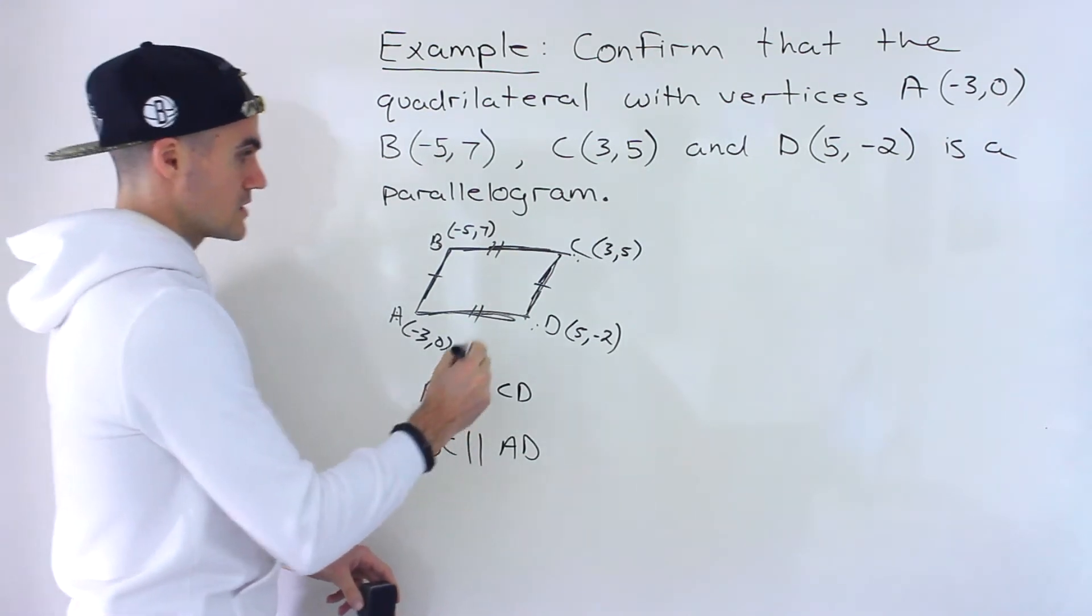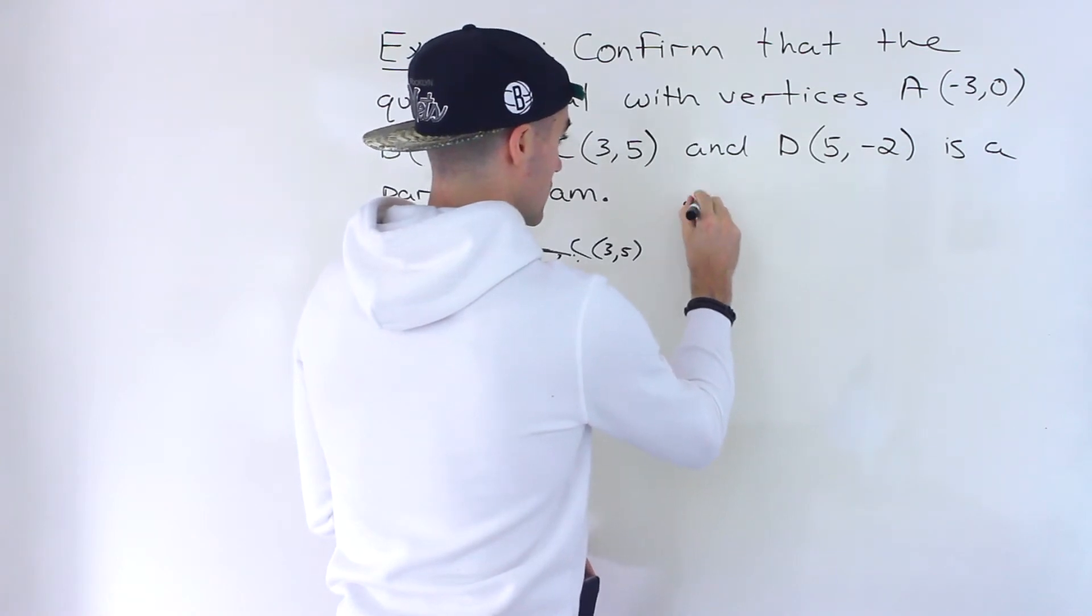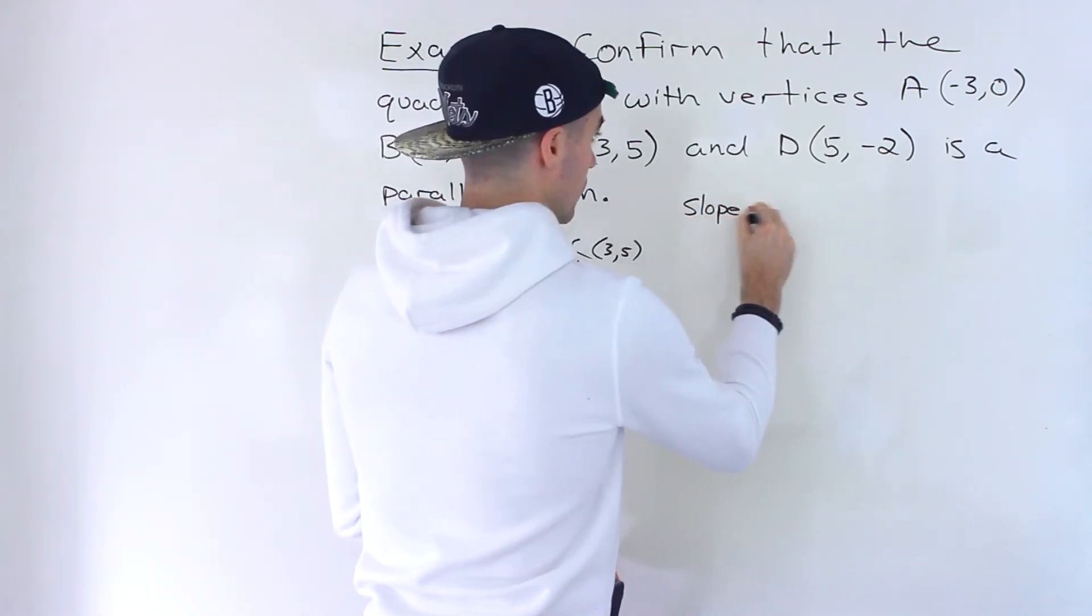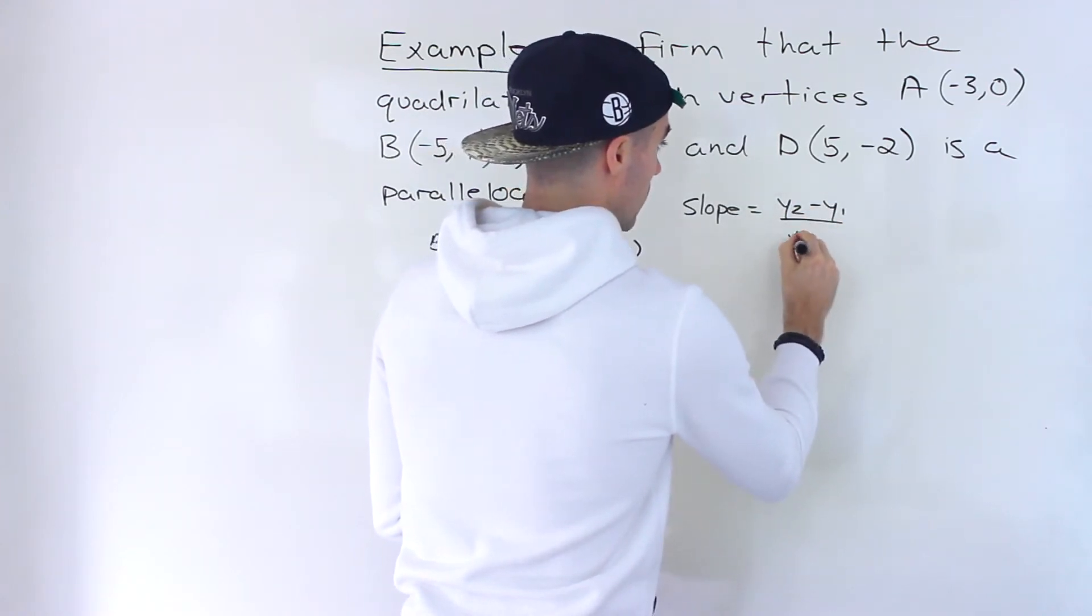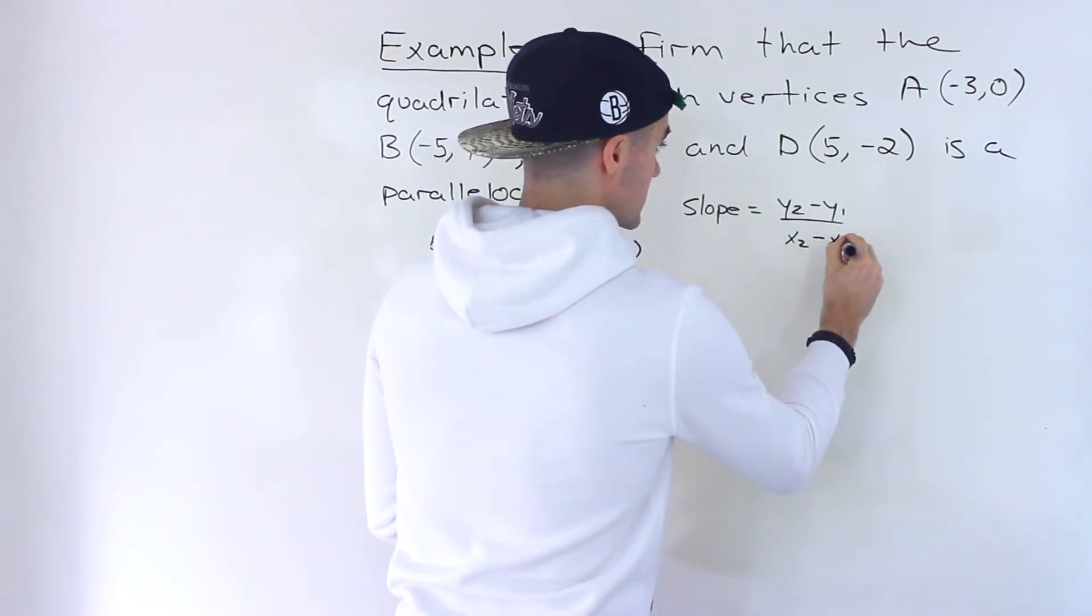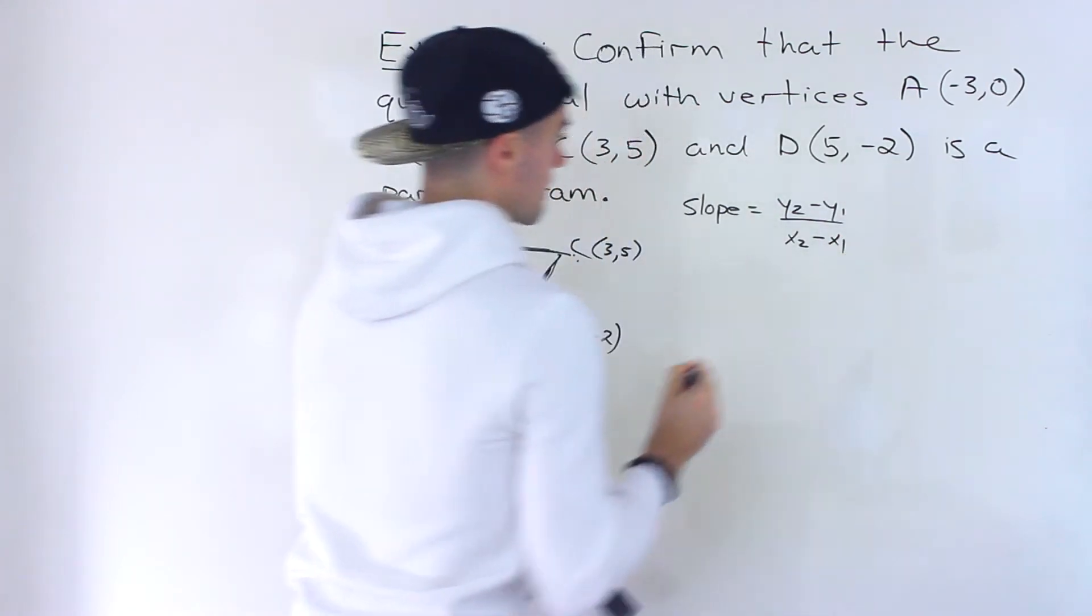So let's go through these one by one. So let's find the, first off, what is the slope formula? Just as a quick review, it's Y2 minus Y1 rise over run over X2 minus X1 like that.